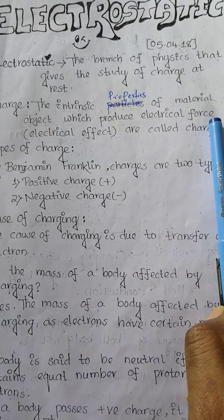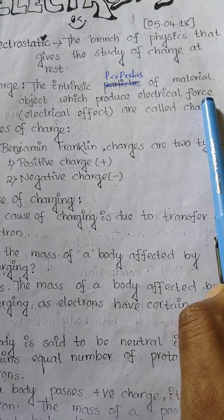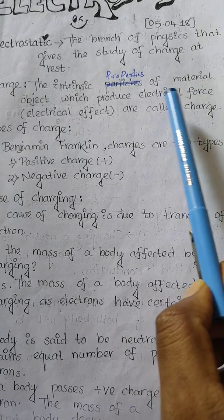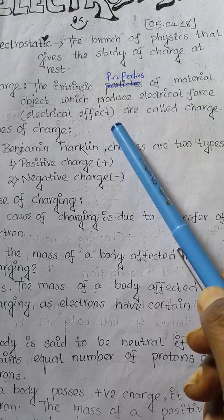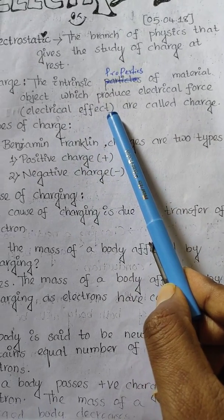These are intrinsic properties of the smallest particles like electrons, protons, and neutrons. Neutrons are neutral, but electrons and protons are charged particles that produce electrical and magnetic effects.